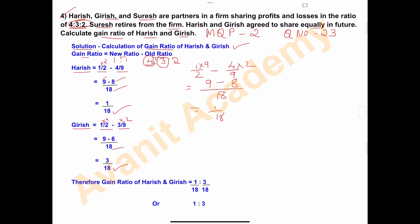Therefore, gain ratio of Harish and Girish is 1 upon 18 to 3 upon 18. The final answer is: gain ratio of Harish and Girish is 1:3.